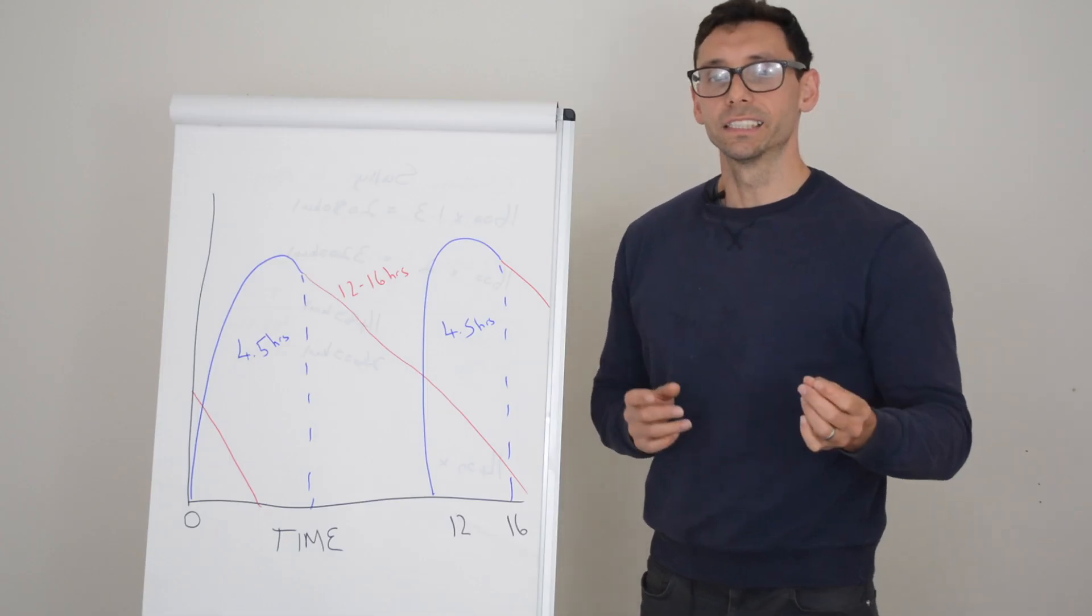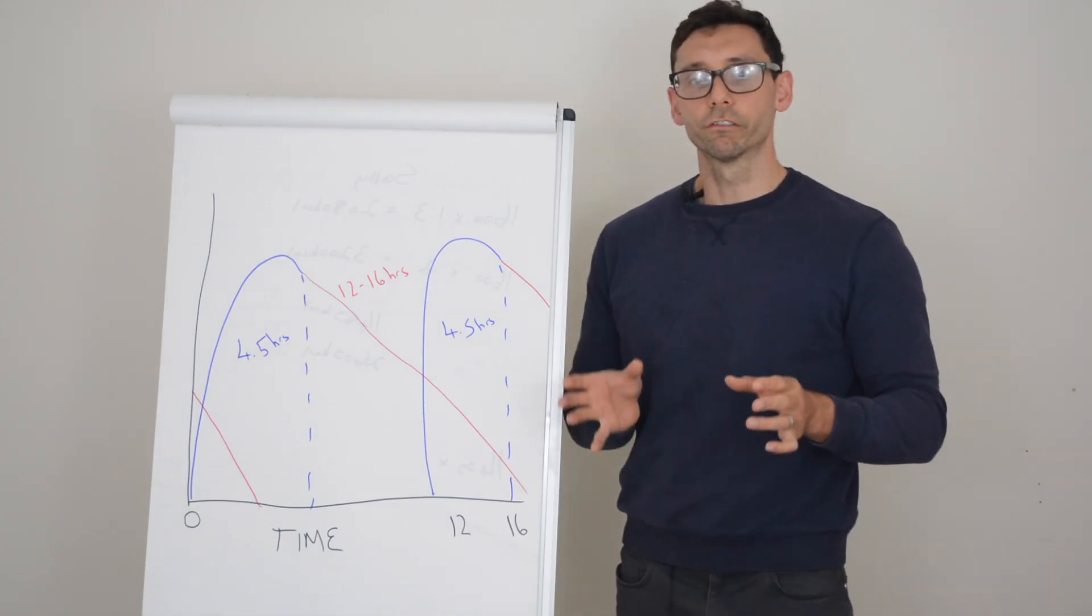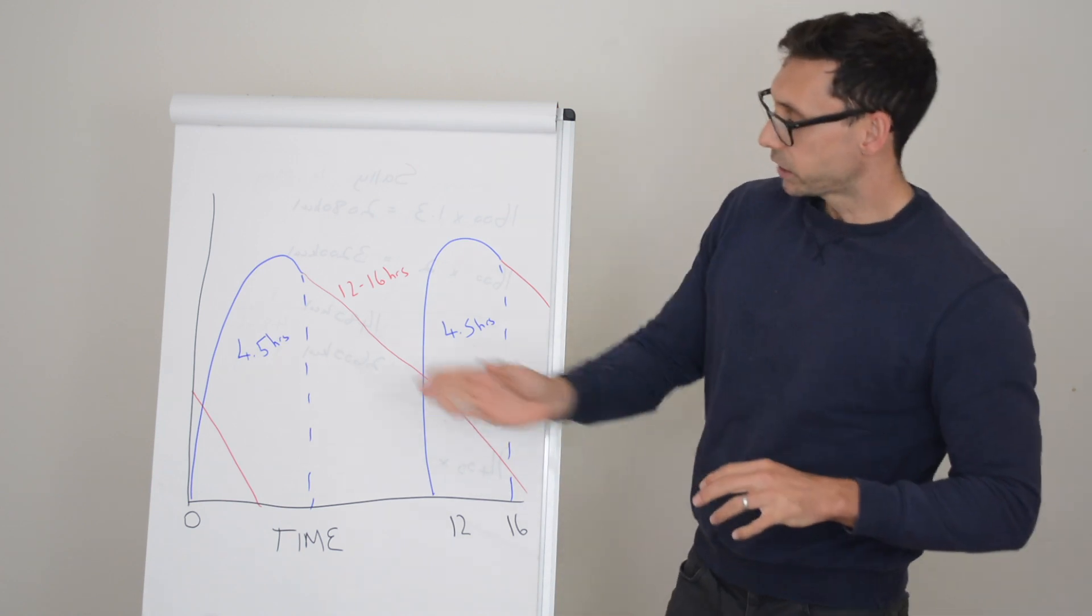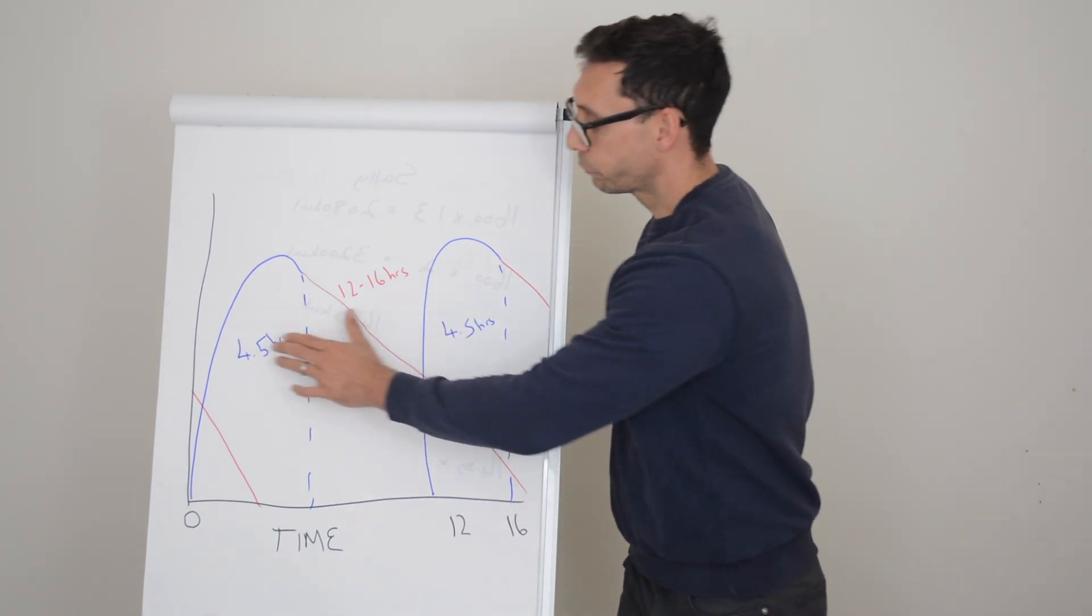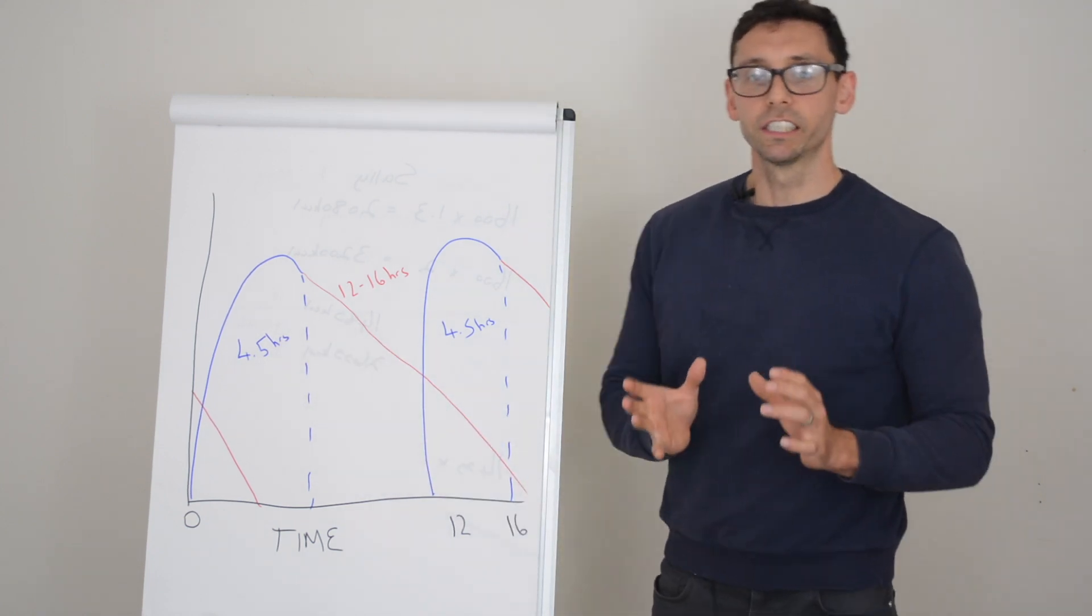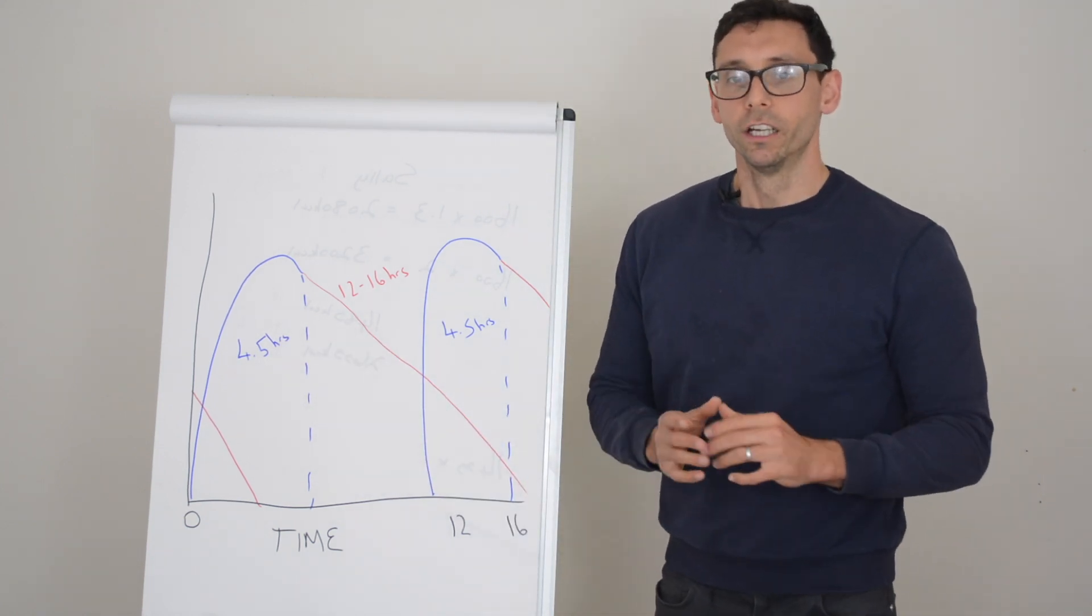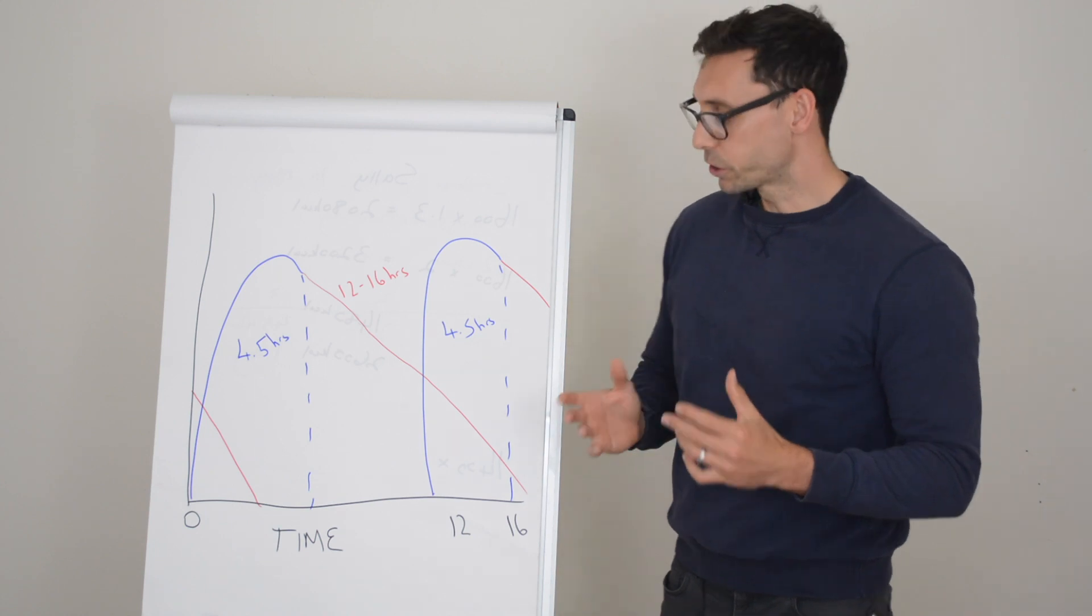How do mixed insulins work? In order to understand mixed insulins, you need to understand the two different insulins that are mixed together. Let's start with the blue one—this is your rapid acting insulin. This one lasts four and a half hours and it is specifically designed to be taken with food, usually at the biggest meals of the day, which generally speaking will be breakfast and your evening meal.